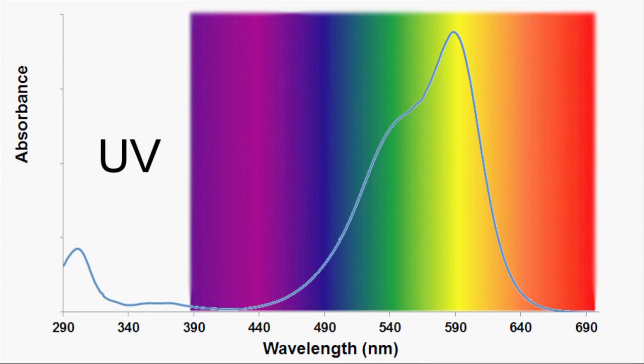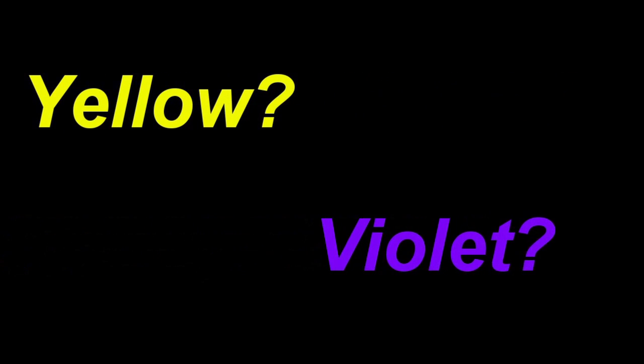If we overlay the visible spectrum onto our graph, it looks like our solution is absorbing the most light in the yellow range. If it's absorbing light in the yellow range, why is our solution violet?